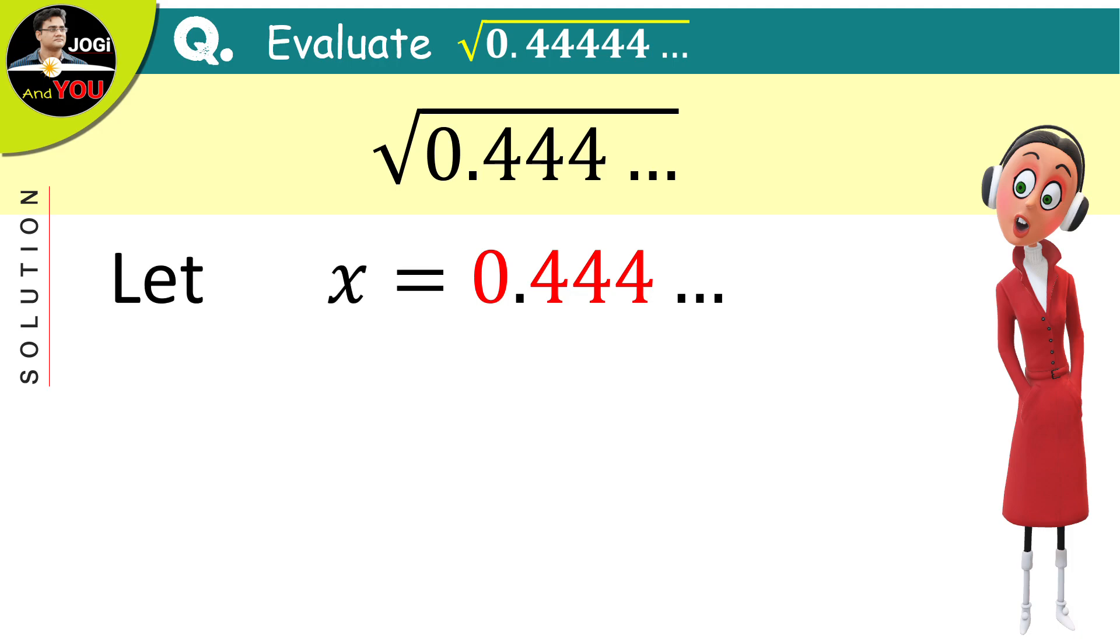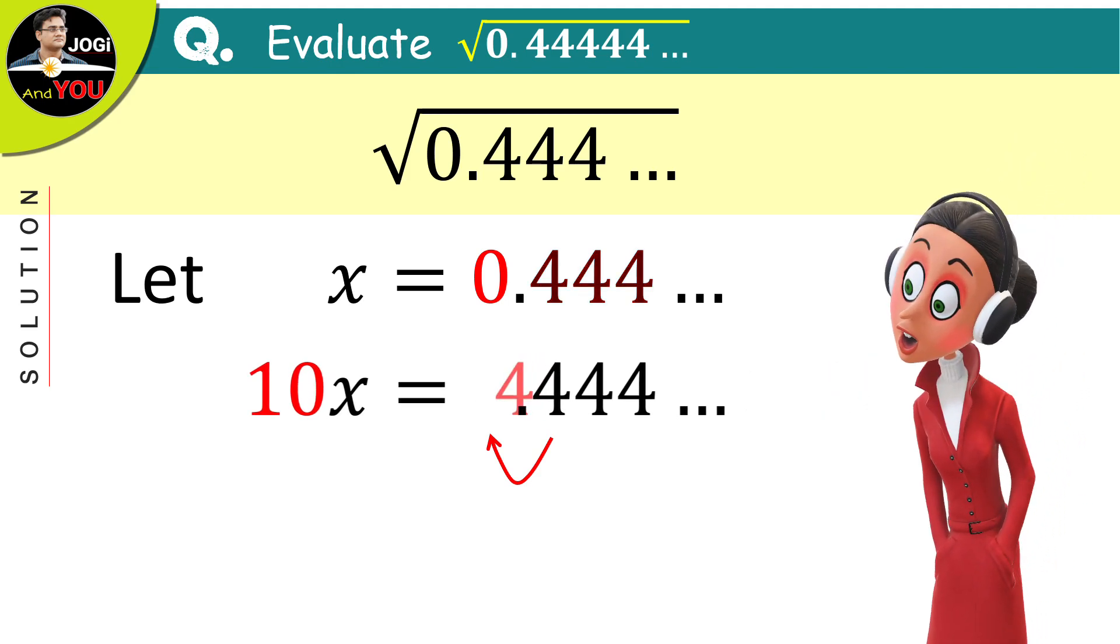Let this number be x and now multiply the equation on both sides by 10. 10 times x becomes 10x and after multiplying by 10, on the right side, the first digit 4 will be released from the decimal point just like this.